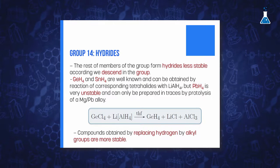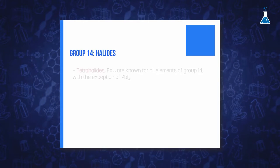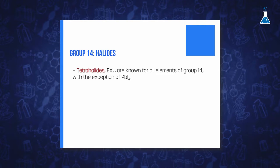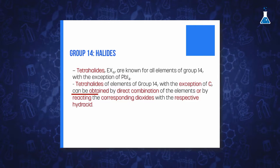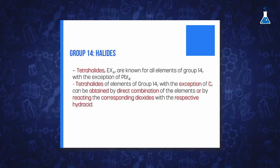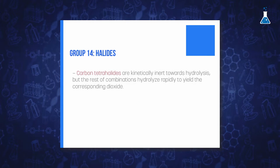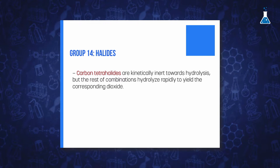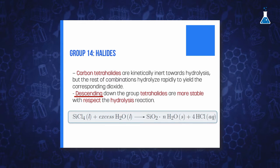The presence of alkyl or aryl groups stabilizes the hydrides of all three elements. The next important family of compounds are halides. Elements from group 14 form halides of formula MX₄, which are all known with the exception of lead tetrafluoride. These compounds, with the exception of carbon, can be easily prepared by direct combination of the elements or by treatment of the corresponding dioxide with the respective halide. Except carbon tetrahalides, which are kinetically stable toward hydrolysis, the rest of the tetrahalides hydrolyze rapidly to the hydrated dioxide. The trend toward hydrolysis decreases on descending the group.